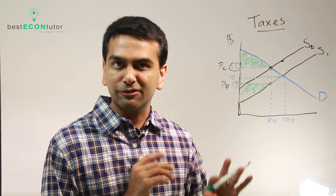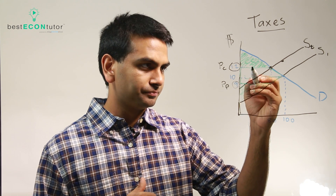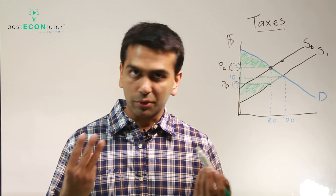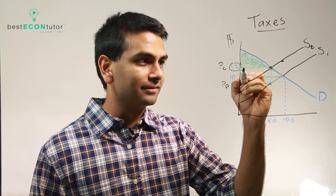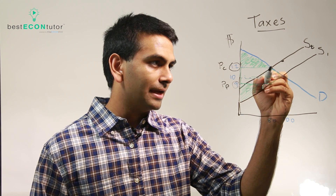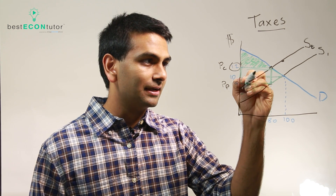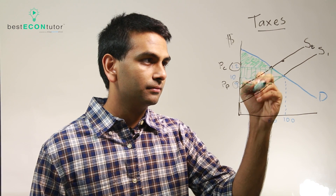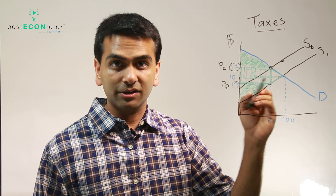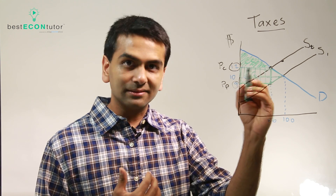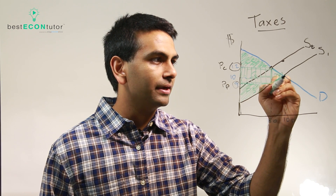The total surplus for society includes CS, PS, and any government revenues, and we also have to subtract any government expenditures, but here there are none. How much money does the government make? They're making $3 per item for 80 items transacted, so 3 times 80. We can look at that as this rectangle, because its height is 3 — the gap between the two supply curves is the per unit tax of $3 — times the quantity of 80. So this length times width is the government revenue. When you take all of that into account, we still have a little bit less area than before. Even though the government gets money, it always gets less than how much CS and PS combined went down by, and that's why there's still this triangle of deadweight loss.